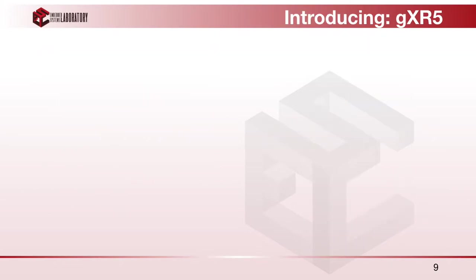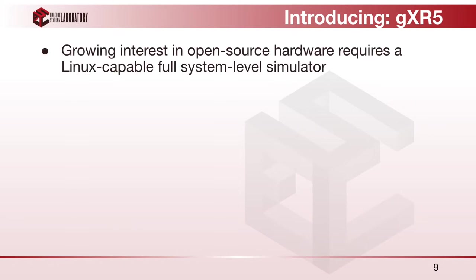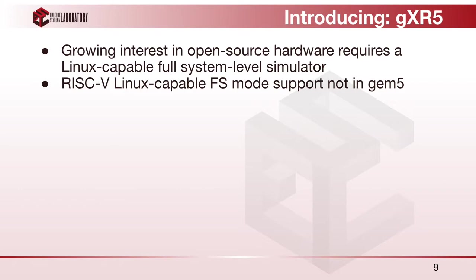As a tandem project with GEM5X, I'd like to introduce my primary project: GEM5 Extensions for RISC-V, or GXR5. All the aforementioned features in GEM5X are targeted to the ARM ISA, but as open-source hardware becomes more popular, there is a growing need for a Linux-capable full system-level simulator for RISC-V architectures. Because RISC-V is entirely open-source, it has none of the licensing fees associated with ARM, making designing and fabricating your own hardware much cheaper and easier. Unfortunately, full system mode support for RISC-V didn't exist in GEM5 or GEM5X — and so GXR5 was created.